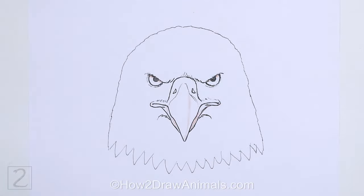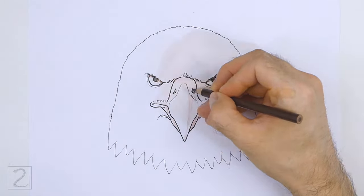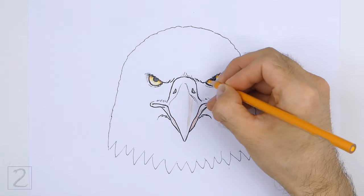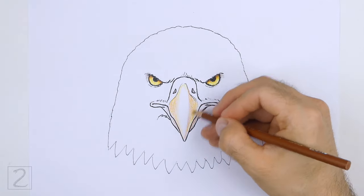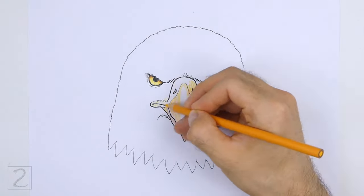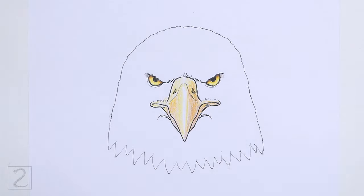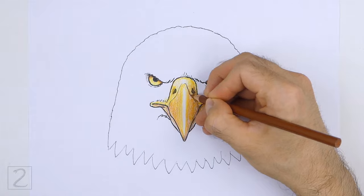Now color your drawing. Use different shades of yellow and orange to color the eyes and beak. Color lightly at first and gradually build up to darker colors. Use light brown and orange to create shadows.